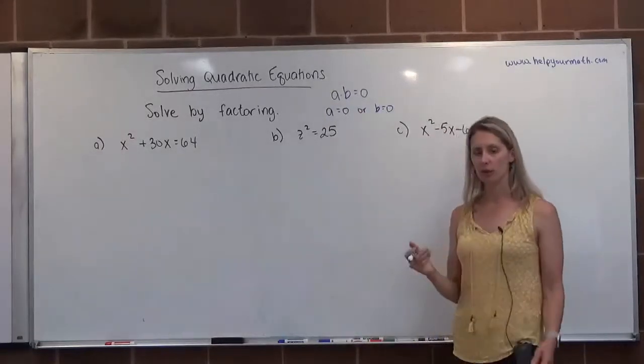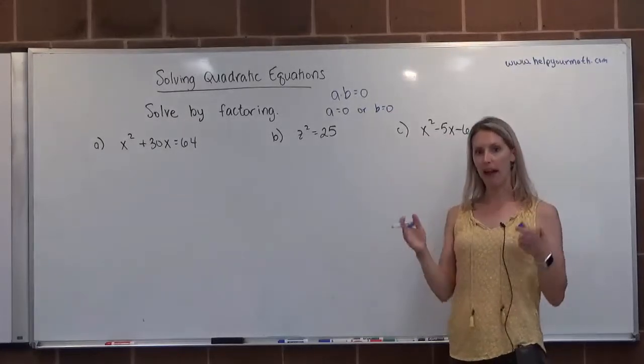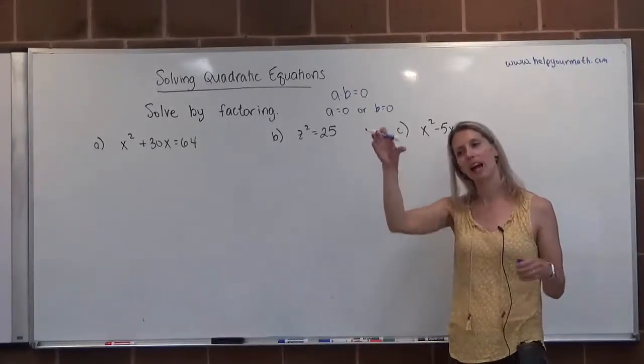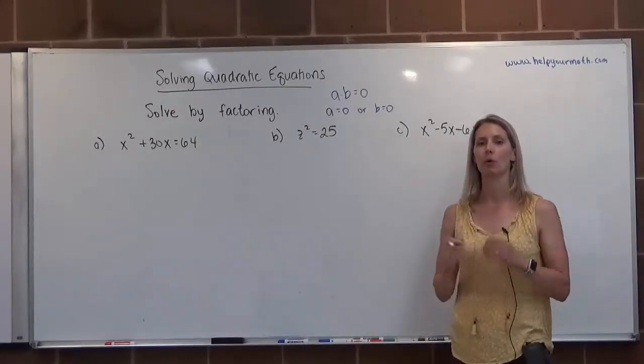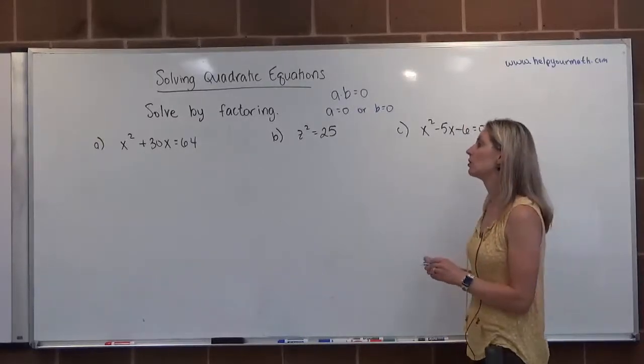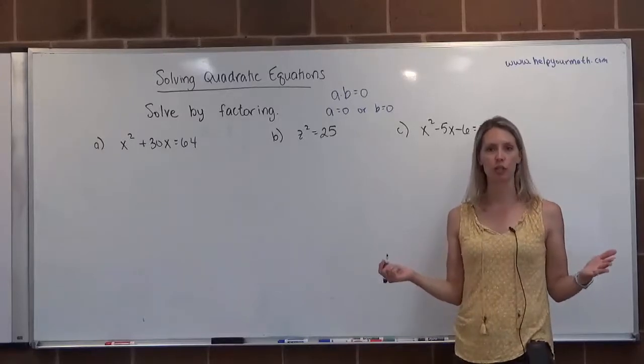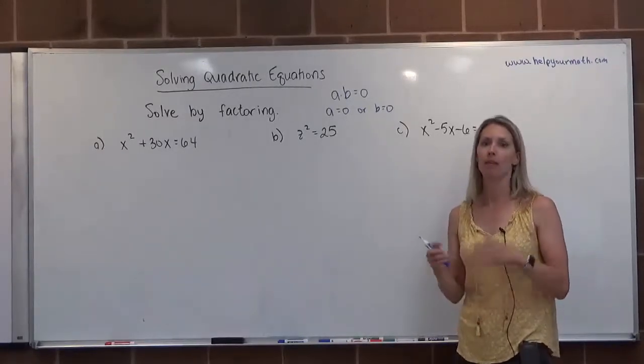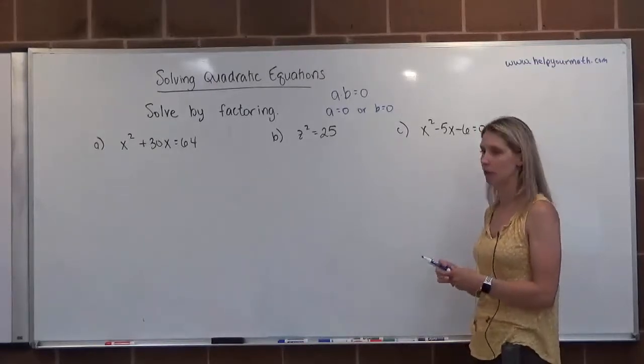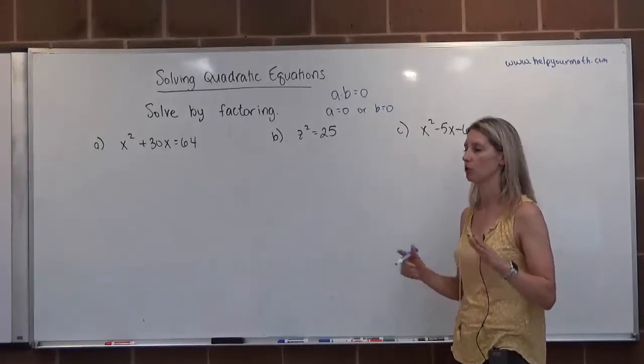So when we solve by factoring, that's what we do. We're going to factor, it's going to equal zero, then we're going to have something times something equals zero, set each piece equal to zero, solve each piece. So typically, we do see two solutions when we're solving quadratic equations by factoring. It is possible to have fewer, it is not possible to have more than two. So two is the maximum.